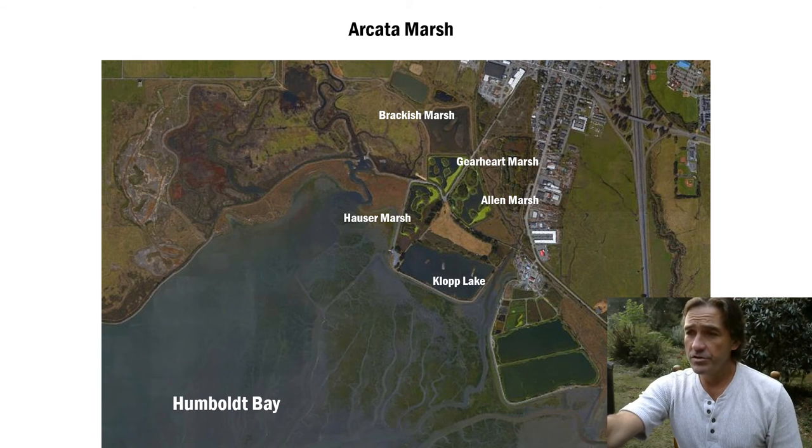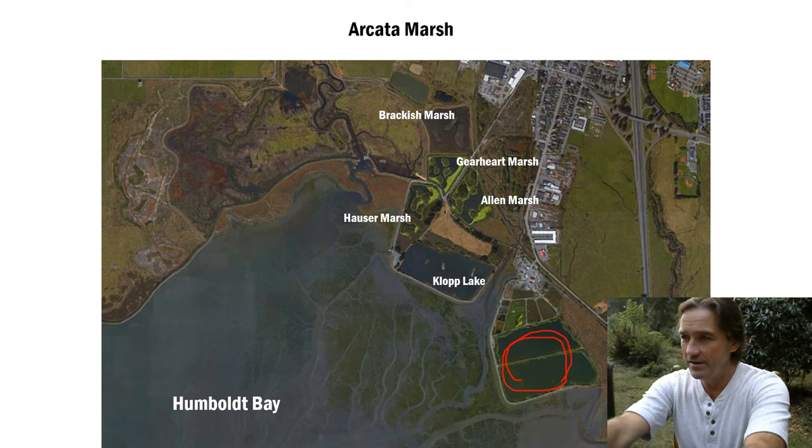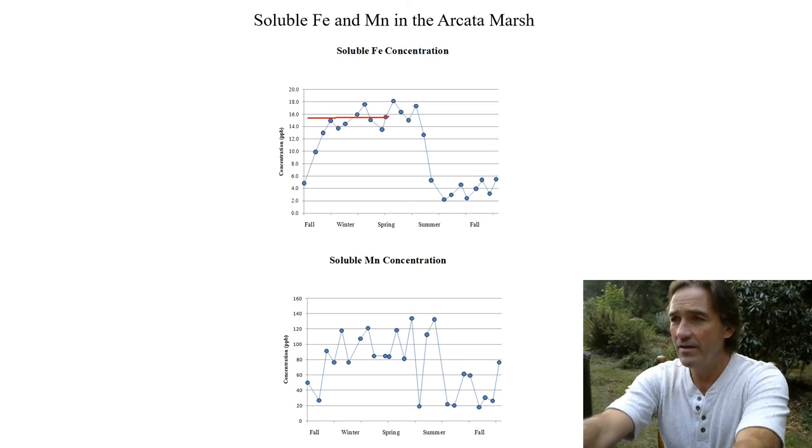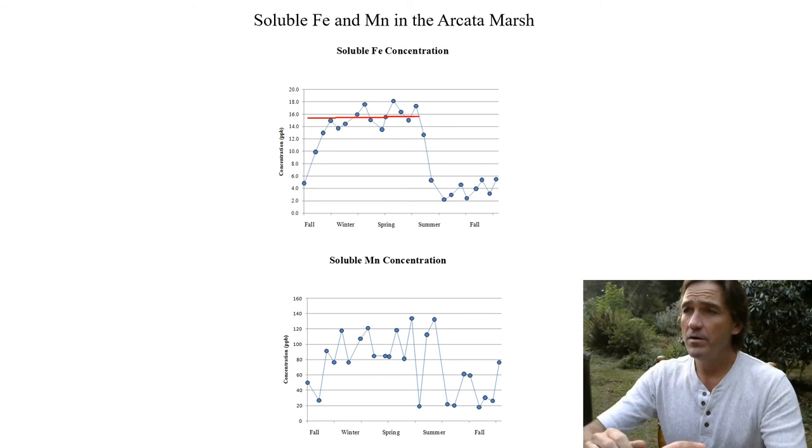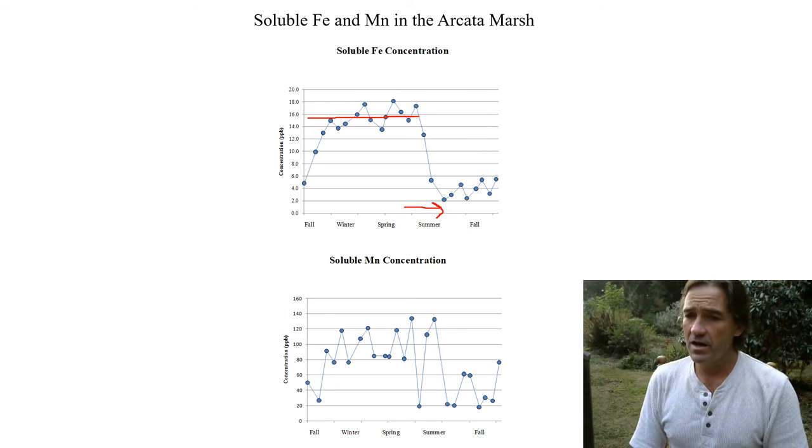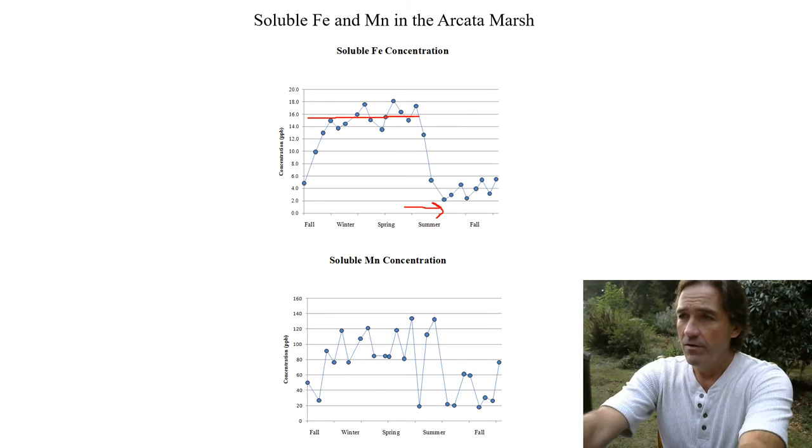I wanted to show you some real data from the marsh. These data are going to be from the oxidation ponds here. This is looking at soluble iron and manganese in the marsh. What we have set up in the wintertime is more reduced environment. So we have a lot of ammonia, a lot of ammonium, reduced nitrogen. But as spring goes along, we get a lot of wind driven mixing.